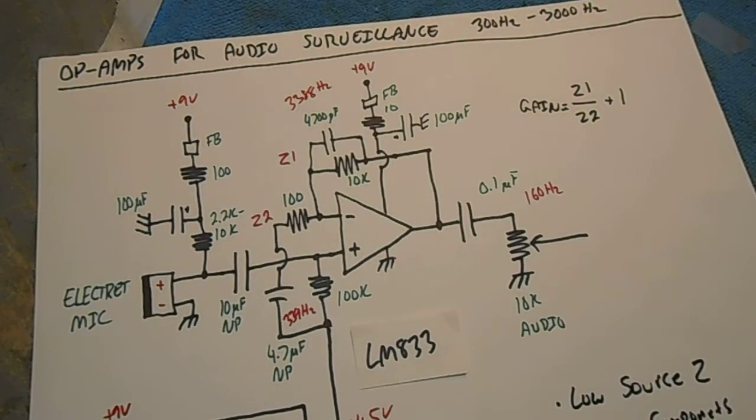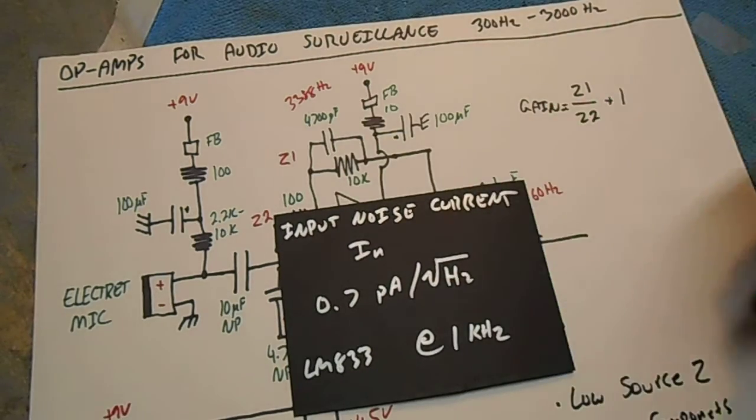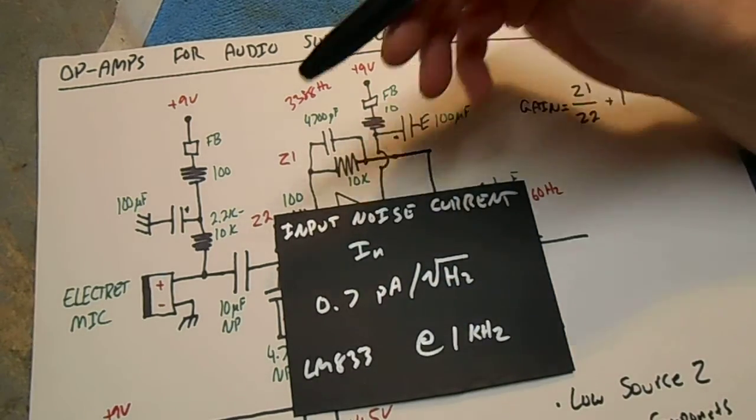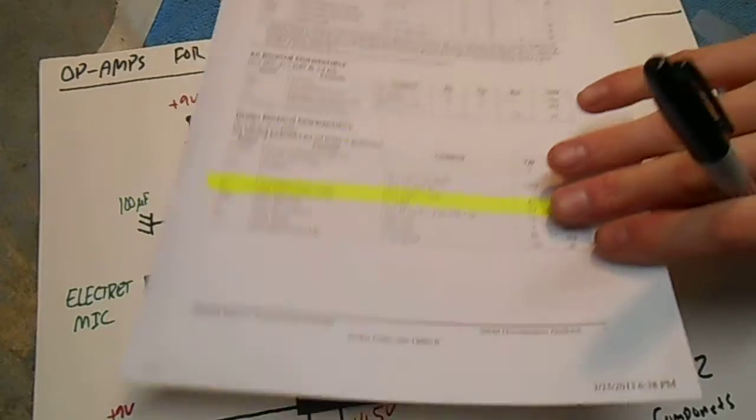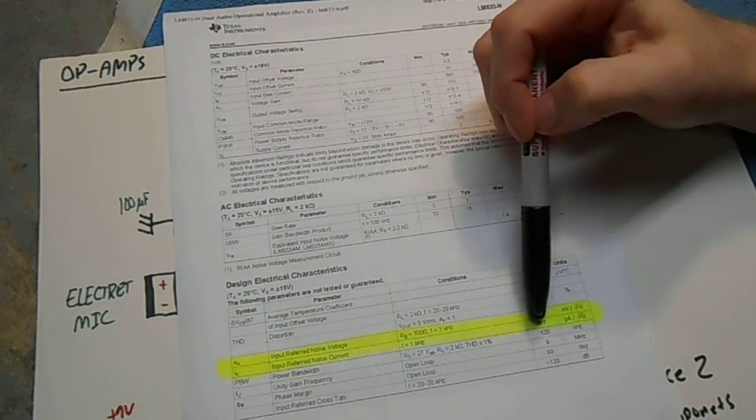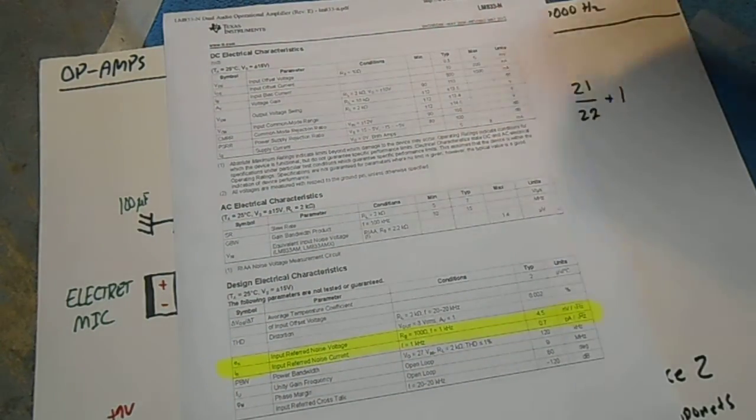The second noise source is called the input noise current, labeled I sub N. And for the LM833 at 1 kilohertz, it's 0.7 picoamps per root hertz.